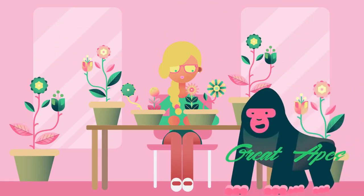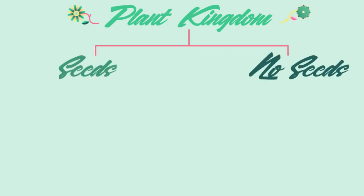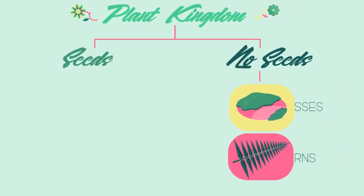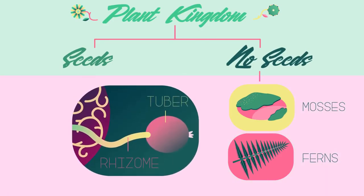So how are plants classified? The plant kingdom can be split into plants with seeds and plants without seeds. Not every plant grows from a seed — like ferns and mosses, for example. They grow from spores instead. Other plants use asexual reproduction and grow new plants from rhizomes or tubers.